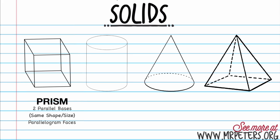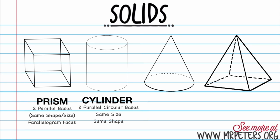You can have a rectangular prism where all the faces are rectangular. You can have a triangular prism where the bases are triangular. You can have a square prism, or a cube. The next one we'll look at is a cylinder. What makes the cylinder special is it has two parallel circular bases. You can see these bases are circular and they're the same size and shape. The rest of it is rounded, so it's different than your typical prism in that it has a rounded face.